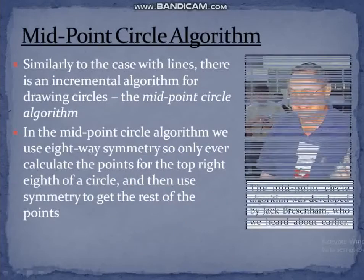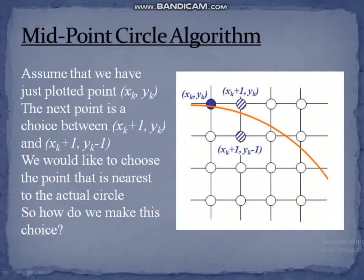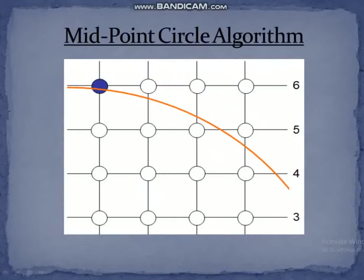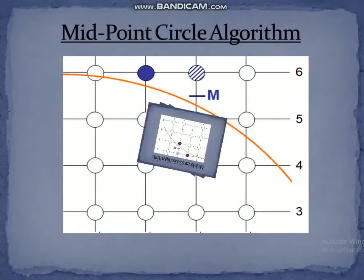The midpoint circle algorithm basically works on 8-way symmetry and was developed by Jack Bresenham. In the midpoint circle algorithm, assume that we have just plotted a point. The next point is a choice between two candidates. We choose the point that is nearest to the actual circle. To make this choice, we calculate the midpoint between the two candidate points. We then see which side of the circle the midpoint falls on and choose accordingly, continuing this process to get all the points.